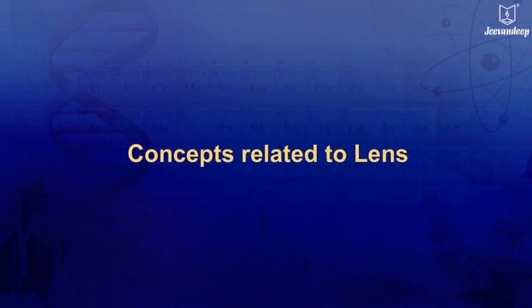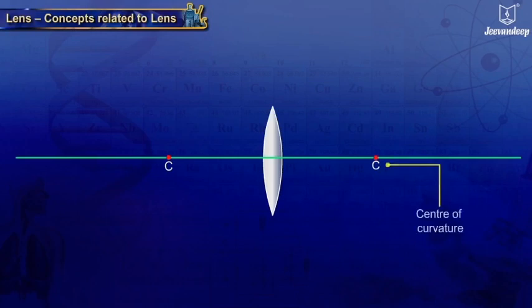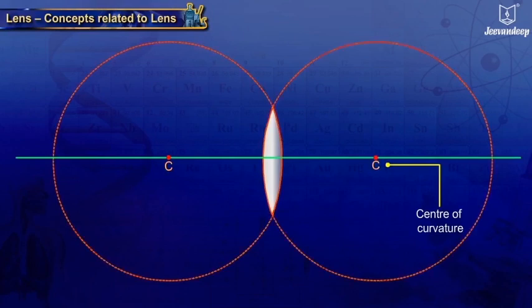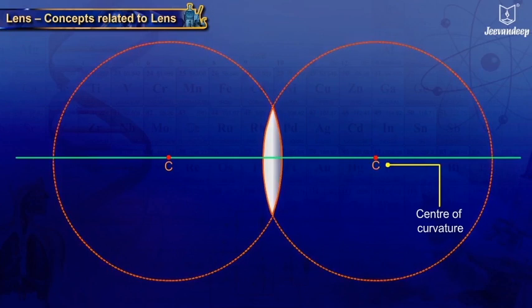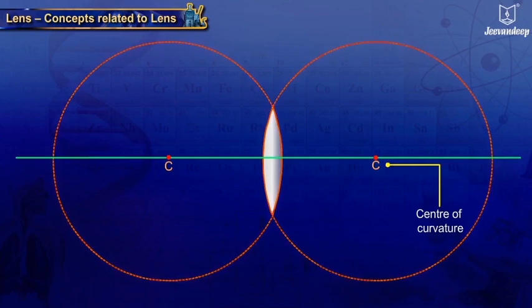Concepts related to lens: The center of curvature, represented by C, of a lens is the center of the imaginary sphere which forms the given lens surface. Each lens has two centers of curvature, C1 and C2.